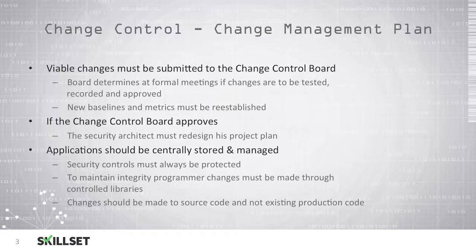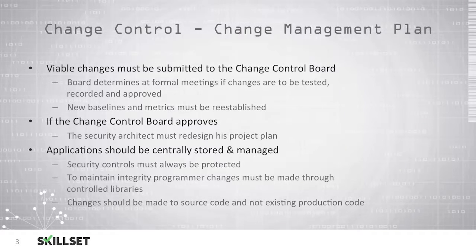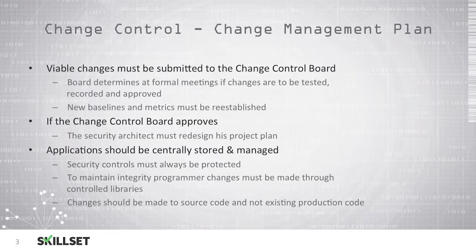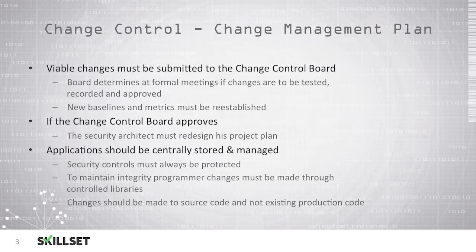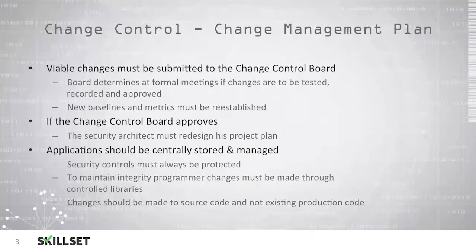In order to maintain integrity, programmer changes should be made through controlled libraries. Any changes that will be made should be made to the source code itself and not to the existing production code. For the CISSP examination, you should remember that changes are never made to the production code of software that is currently in use. Rather, they should be made to the source code and then pushed out to the program.